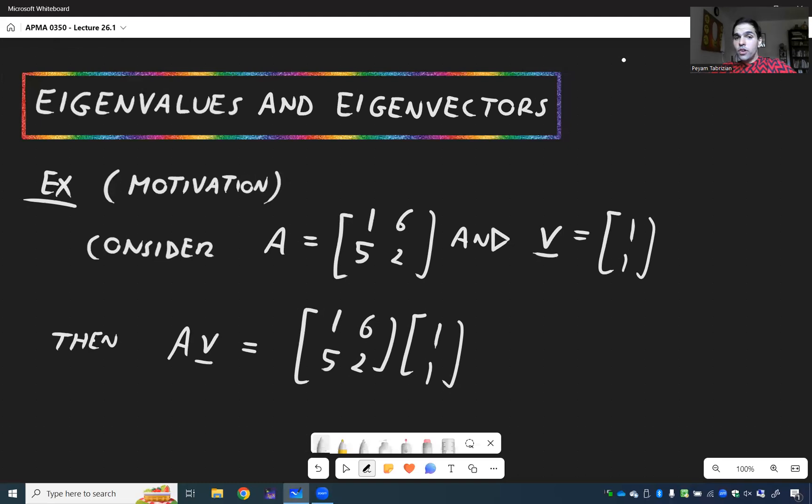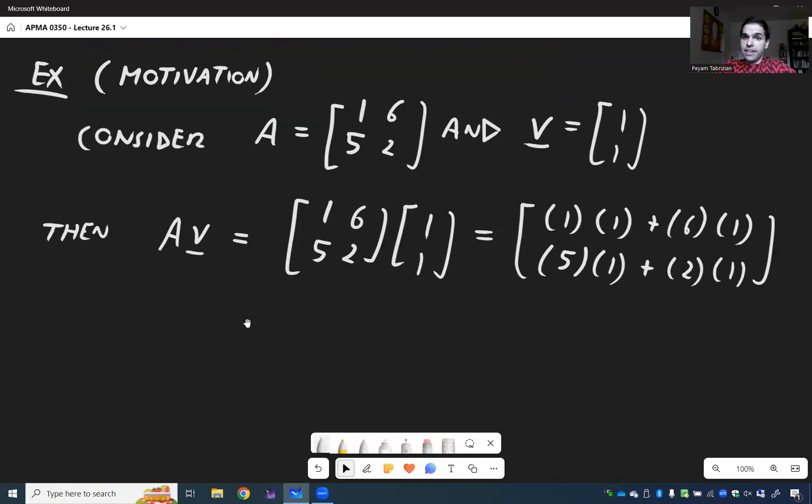And let me remind you how to multiply a matrix by a vector. Here, you just do dot products. So it's 1 times 1 plus 6 times 1, and then 5 times 1 plus 2 times 1. And once the dust has settled, we end up getting 7, 7.